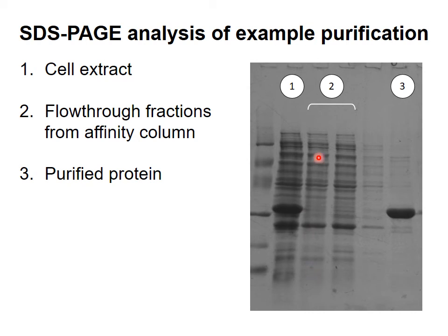You want to wash the column well to remove all unwanted proteins, leaving only the protein of interest behind on the column. You can then elute the protein of interest by adding a molecule that competes with the protein for binding to the nickel. This elution buffer will out-compete the protein of interest for binding to the column, and the desired protein will come off in a greatly purified form. You can see that this protein is the main component of the eluted solution.